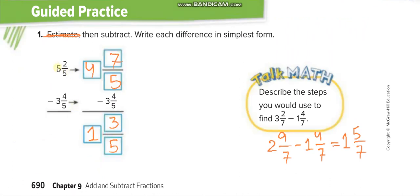For the next example, we again cannot subtract 4 from 2, so we take a carry from 5, making it 4, and add the denominator to the numerator: 5 plus 2 gives 7 over 5. Similarly, in another problem, we cannot subtract 4 from 2, so we take a carry from 3, making it 2, and add the denominator 7 to the numerator 2, giving 9 over 7. Then subtract the same mixed number from it.